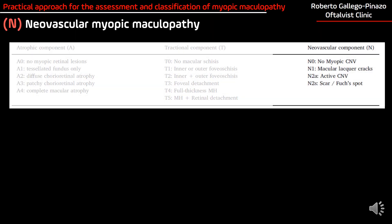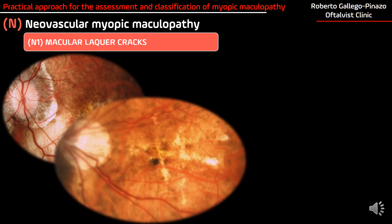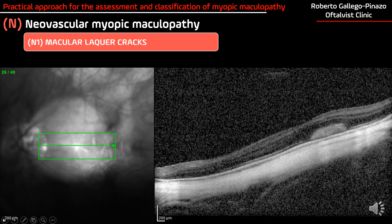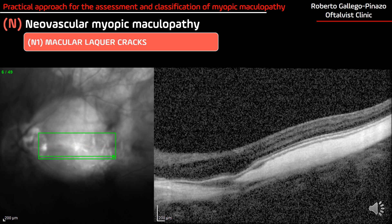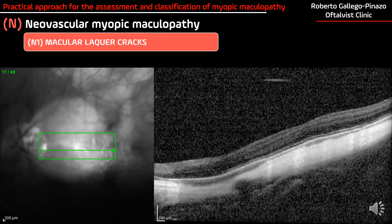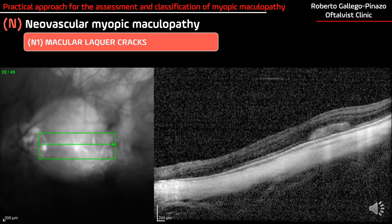Finally, we have the neovascular component of myopic maculopathy. First, with the presence of lacquer cracks — we should not forget that macular lacquer cracks are precursors of the development of choroidal neovascularization, and these patients may need to be followed up very closely. Here we can see a subretinal spontaneous hemorrhage in a highly myopic patient; in the OCT, the RPE is intact. Remember that macular lacquer cracks develop, in many cases, following a spontaneous subretinal hemorrhage.